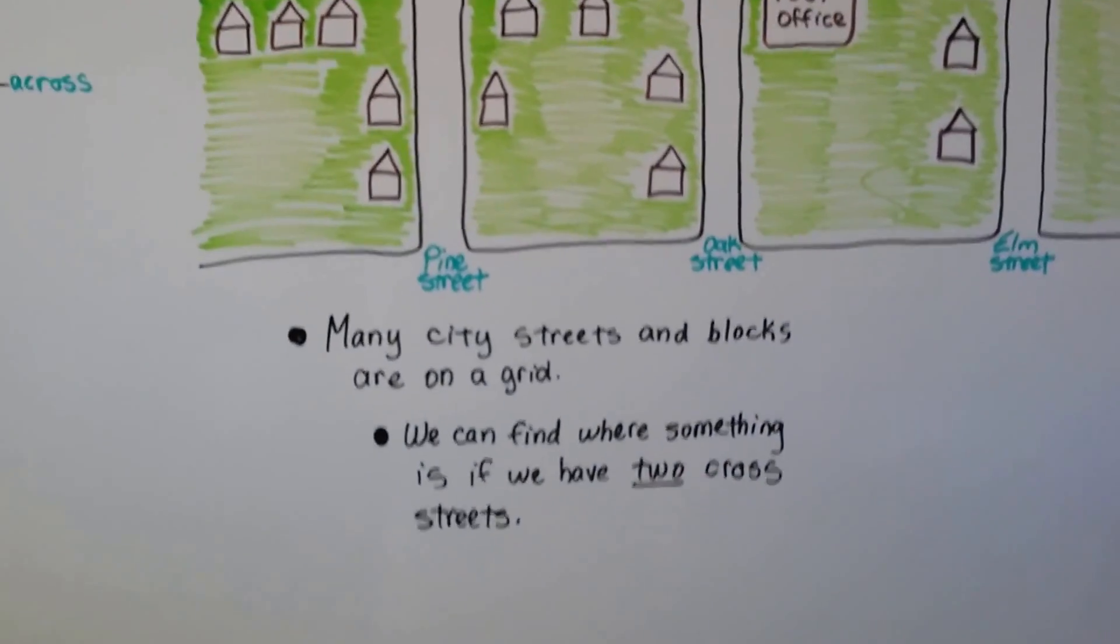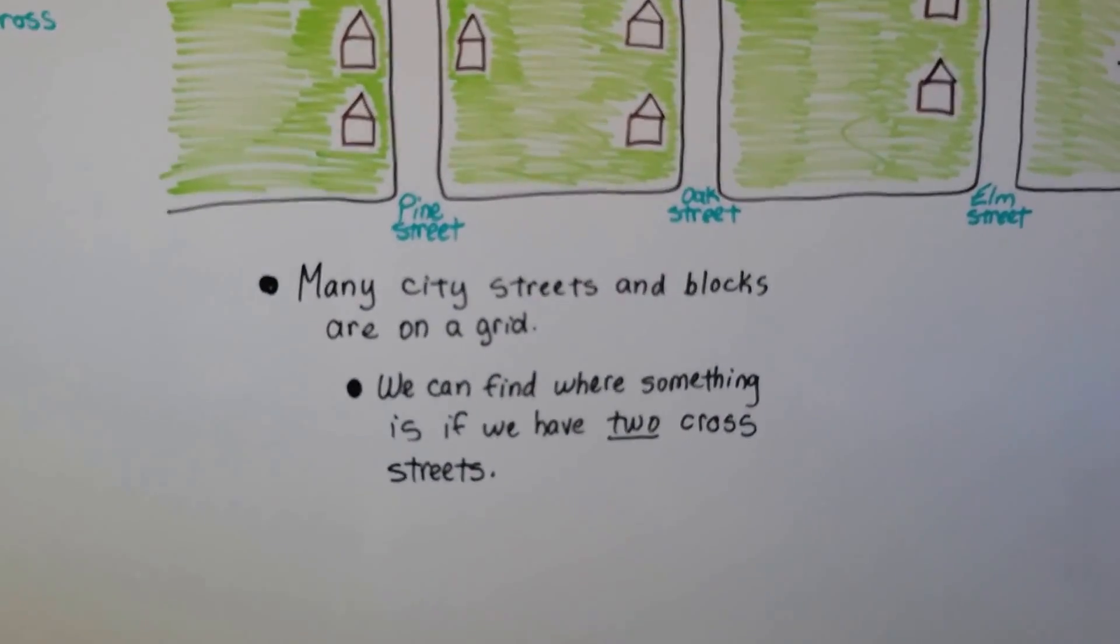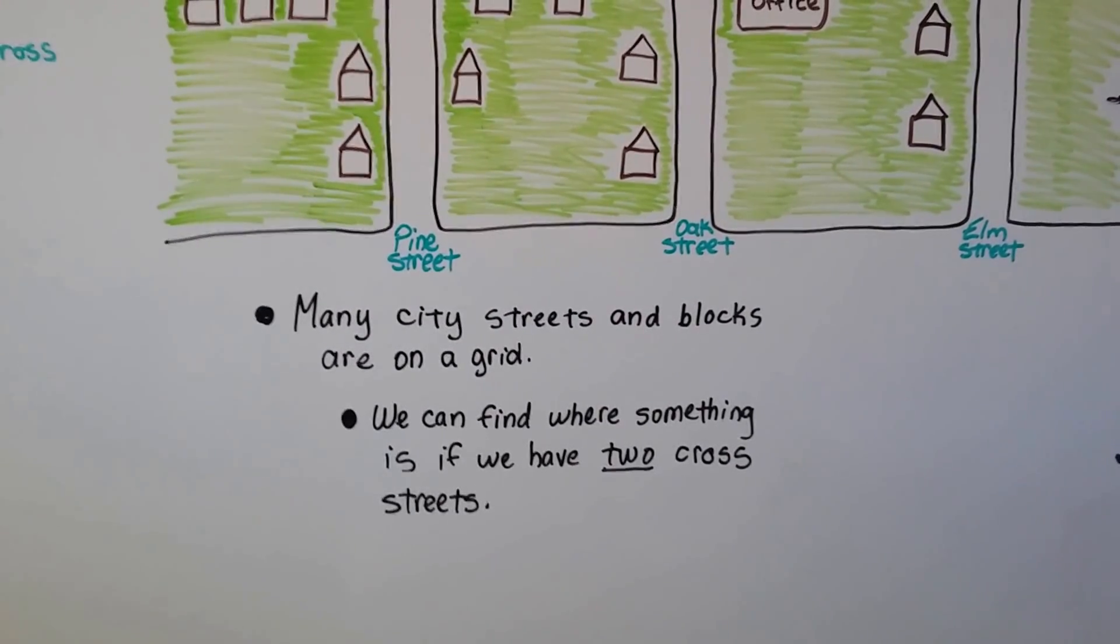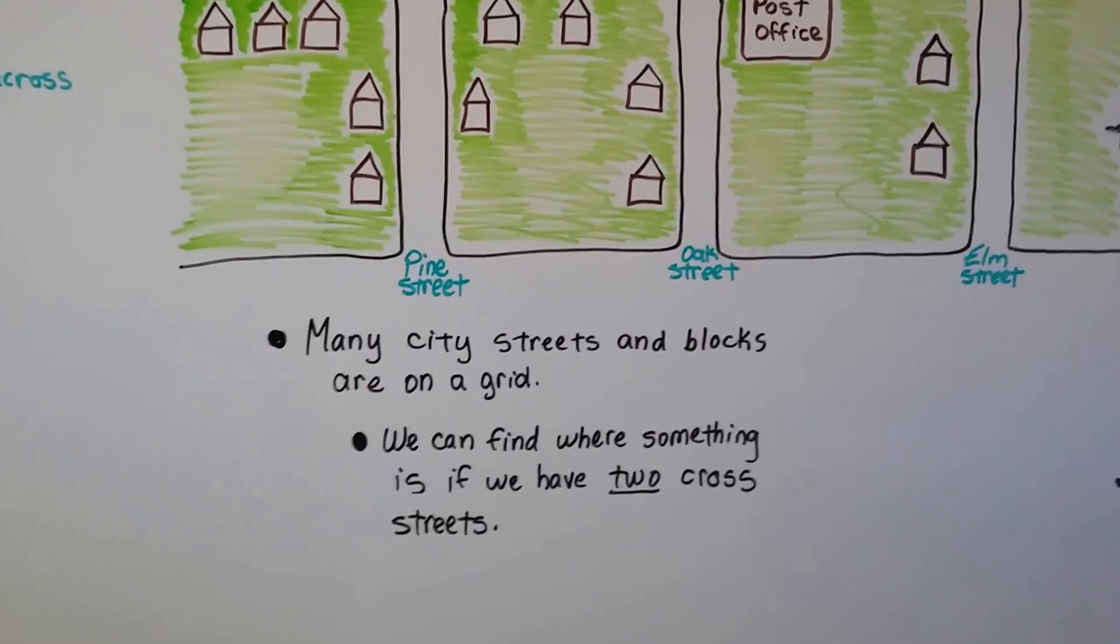Many city streets and blocks are on a grid. The streets crisscross and we can find where something is if we have two cross streets.